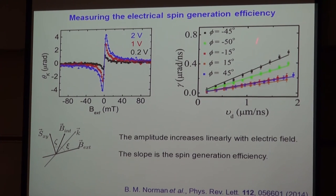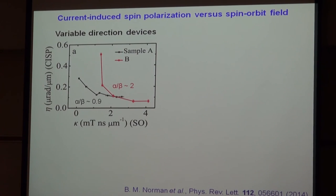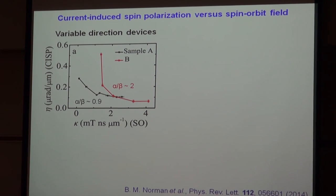We do these measurements along different directions. The data increases roughly linearly with electric field. We often plot things in terms of the spin drift velocity because we're not exactly sure what our contact resistance is, so we don't have to worry about the voltage drop across the contacts. The key result is how the spin-orbit splitting is related to the electrically generated spin polarization efficiency. We were surprised to see that it seems to be inversely related, which is not what any existing theories we could find would predict. Because we were surprised, we did measurements on another four-contact device, which also had a different ratio of Rashba and Dresselhaus spin-orbit fields.